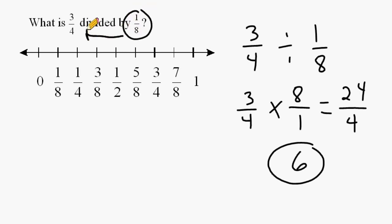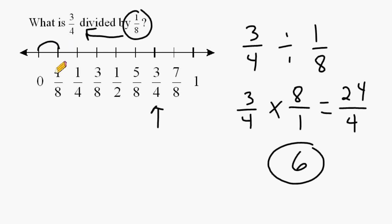So that means it would take 6 groups of 1 eighth to make 3 fourths. We can use the number line shown to demonstrate this concept. From 0 to 1 eighth is 1 group of 1 eighth, and we want to see how many groups of 1 eighth it takes to reach 3 fourths. So: 1 group, 2 groups, 3 groups, 4, 5, and 6 groups of 1 eighth to produce 3 quarters.